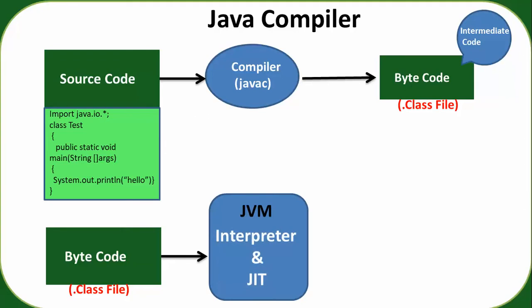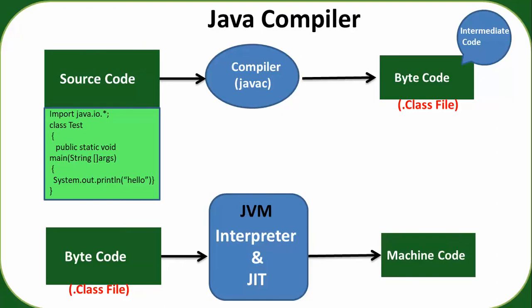The Java Virtual Machine is different for Windows, Linux, and Mac OS, but the same bytecode can run on all these different platforms. If you have a .class file on Windows, that same class file can run on Linux or Mac OS. The JVM uses both an interpreter and a JIT compiler for code optimization and performance improvement, generating machine code from bytecode to produce the output.